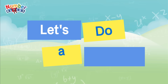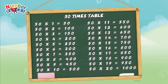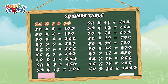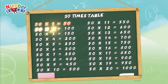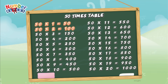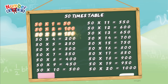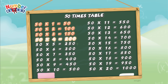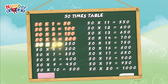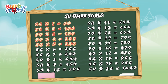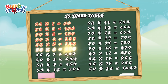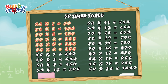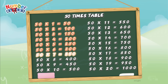And now join me and let's do a recap. Let's learn the 50 times table, let's go! 50 multiplied by 1 is equals to 50. 50 multiplied by 2 is equals to 100. 50 multiplied by 3 is equals to 150. 50 multiplied by 4 is equals to 200. 50 multiplied by 5 is equals to 250. 50 multiplied by 6 is equals to 300. 50 multiplied by 7 is equals to 350.